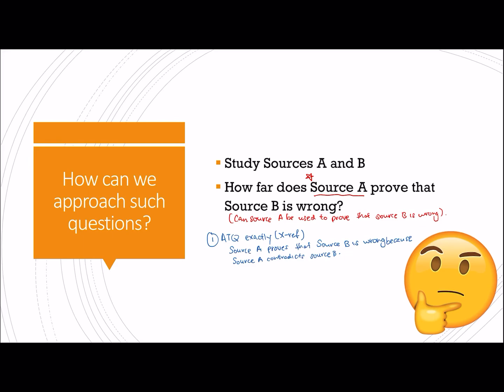So in this sense, this first line that we are using to ATQ is already our linking statement in this sense, because we are already given a reason for why source A can prove that source B is wrong.